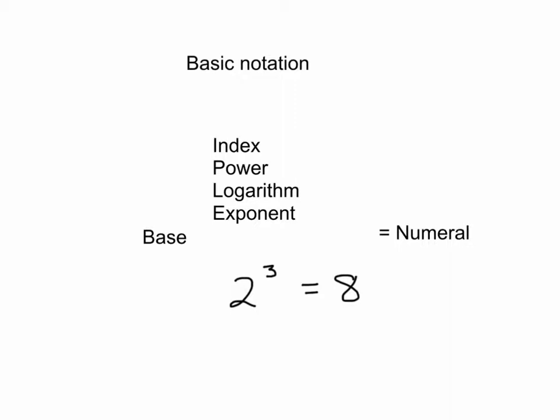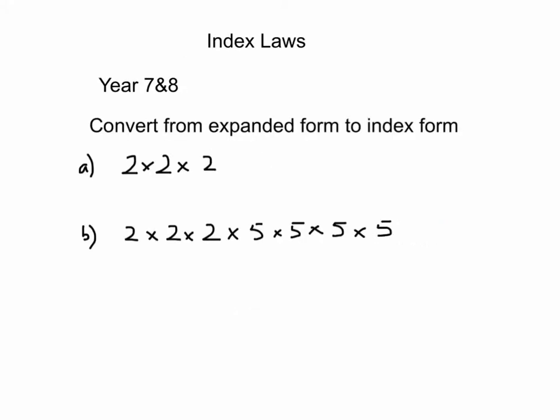Basic notation: the large number is called the base, the small superscript number can be called the index, the power, the logarithm, or the exponent. Most commonly we use power or index, so this would read 2 to the power of 3 equals 8, and 8 is just our regular numeral or we call that a number.